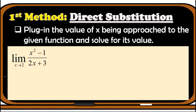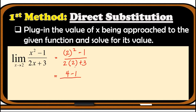Fourth example: evaluate the limit of x squared minus 1 over 2x plus 3 as x approaches 2. Let x equal 2: we have 2 squared minus 1 over 2 times 2 plus 3. This gives us 4 minus 1 over 4 plus 3, which simplifies to 3 over 7. So the limit is 3 over 7.